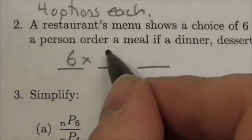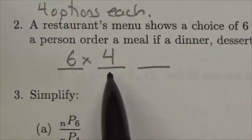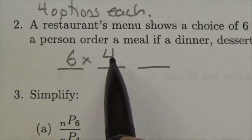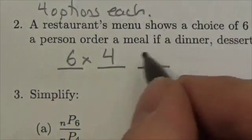For the dessert, I put the number four. Again, not four factorial—I'm not permuting the desserts. Four by itself represents a single choice from four options.